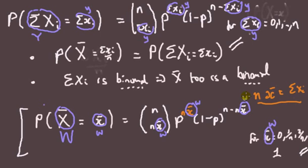That's it — hope that made some sense. This kind of approach can be extended to other types of means where x-bar equals the sum of x_i over n and the x_i follow some other distribution, for example Poisson. Have a go at that last example. Good luck.